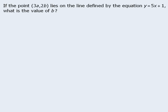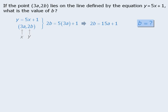Here's another example. The point lies on the line Y equals 5x plus 1, and we want to find the value of B. We have a line defined by this equation, and we know that this point lies on the line. Keep in mind that the point consists of an x value and a y value. If this point lies on the line, then the coordinates of this point must satisfy the equation of the line. In other words, we can replace y with 2b and replace x with 3a to get the following equation, which we can rewrite as 2b equals 15a plus 1. The target question asks us to find the value of B.